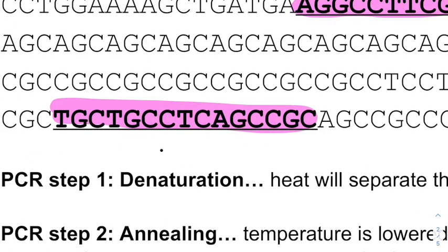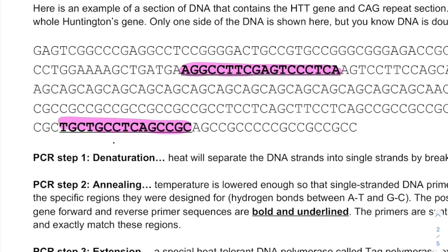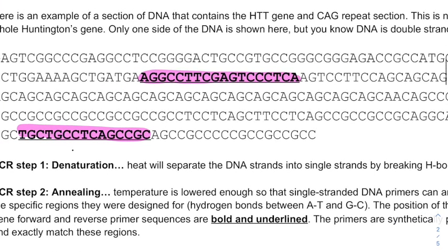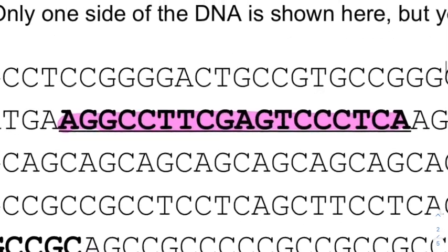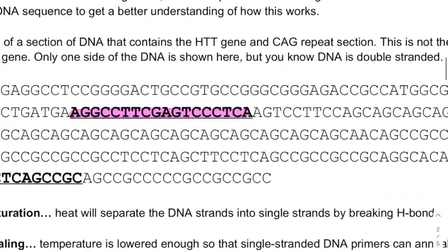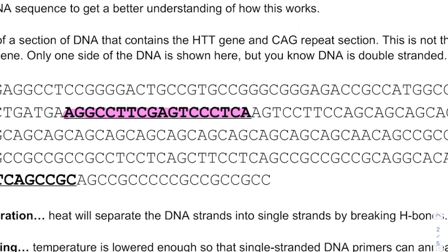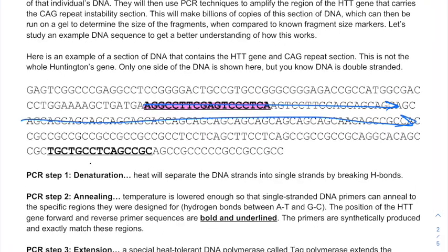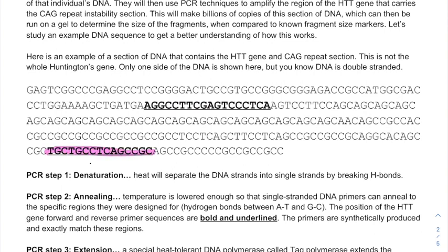In PCR, step one is denaturation: we heat the sample in a PCR machine to separate the two sides into single-stranded pieces. Then we cool it to allow the primers to anneal. The forward primer anneals to one section, and then heat-tolerant DNA polymerase forms the other side, going in one direction — that's step three, extension. Extension also happens on the other side, where the reverse primer anneals and Taq polymerase makes the other strand in the opposite direction.